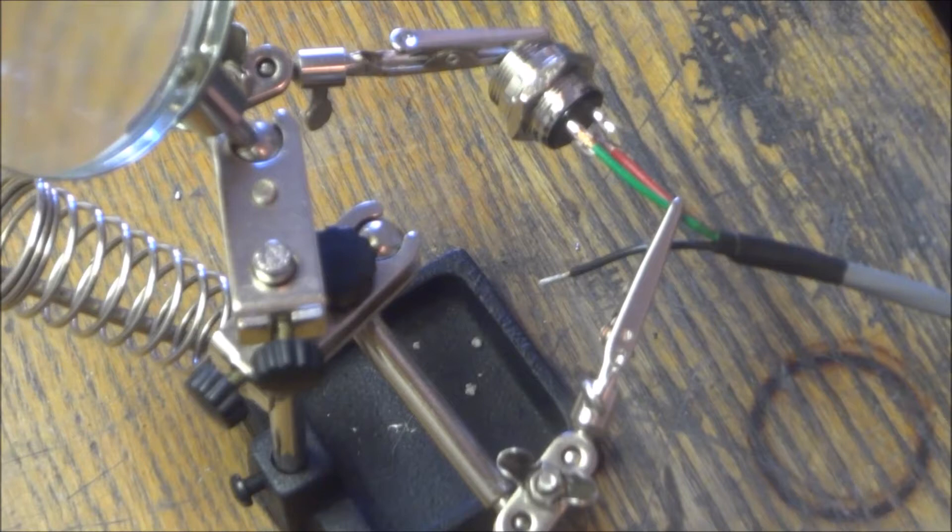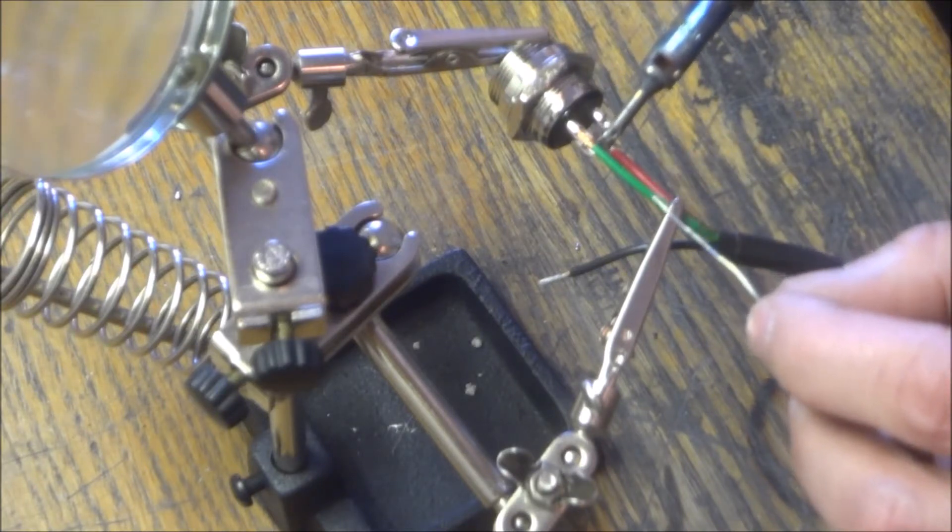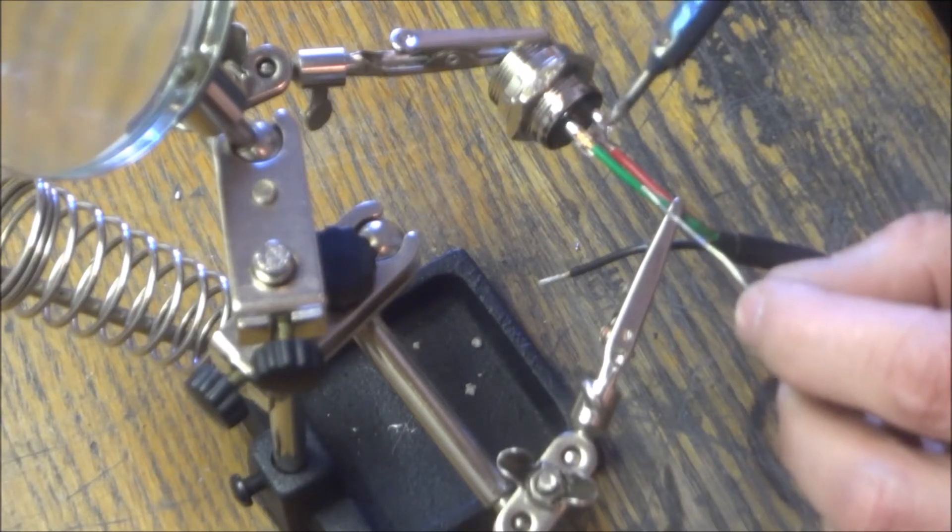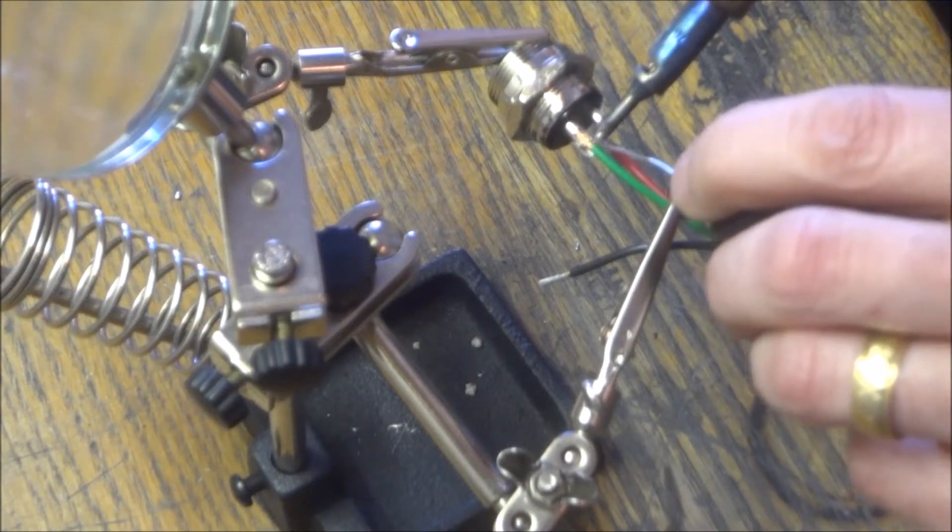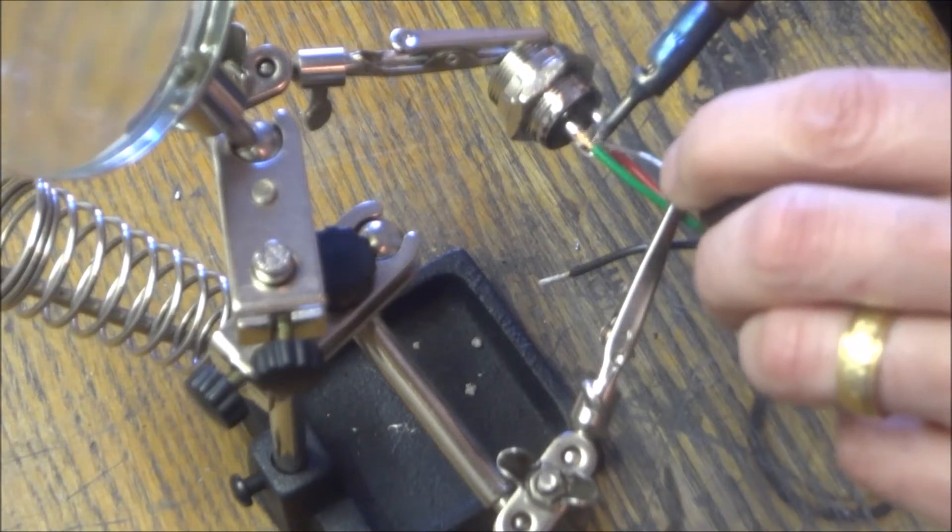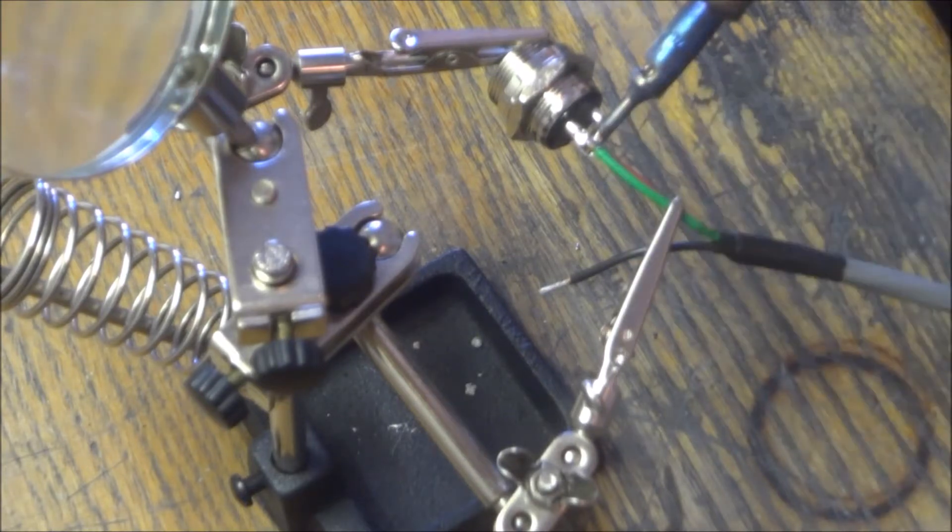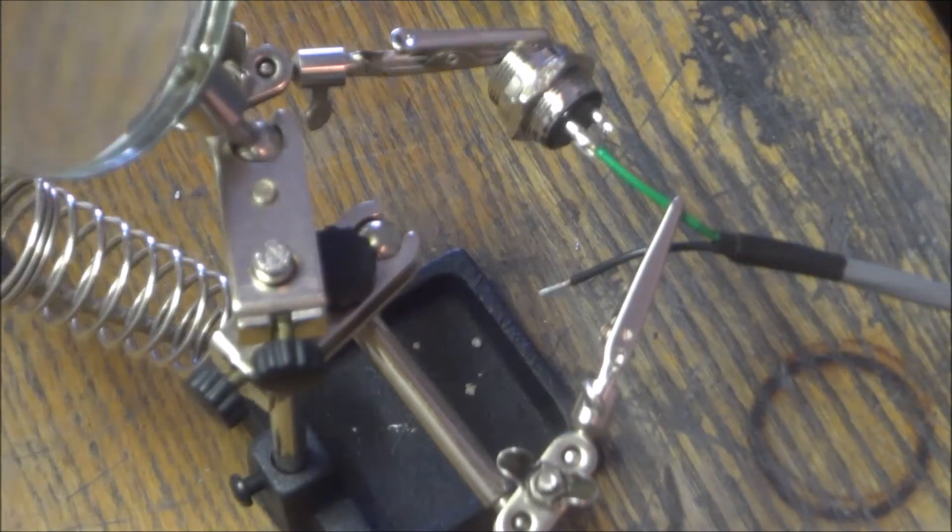And the trick that I found is that you want to get your iron touching the copper and the pin, and you want to touch your solder to the iron and draw it towards the copper and then just hit the copper wire like so. It doesn't take long. So we've got our green wire connected to pin three.